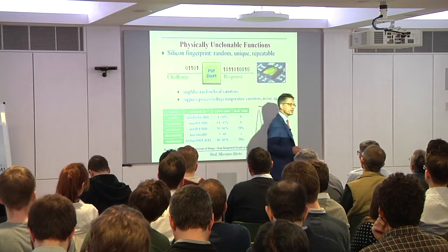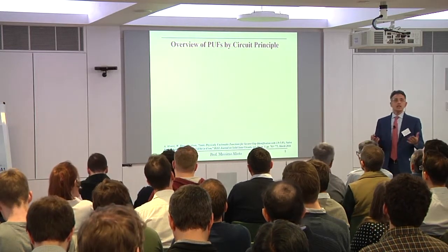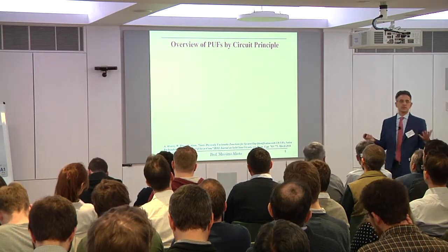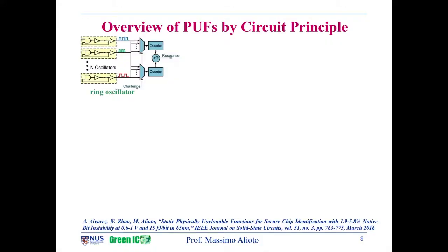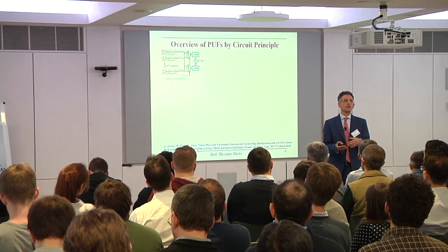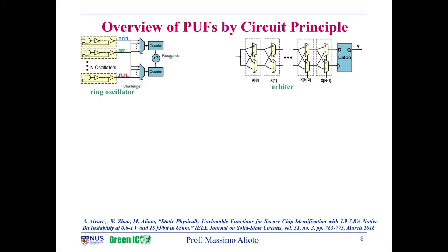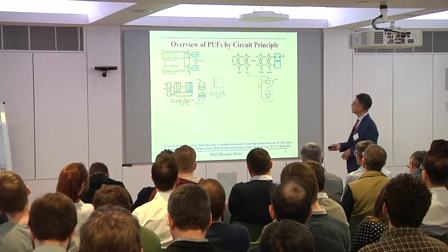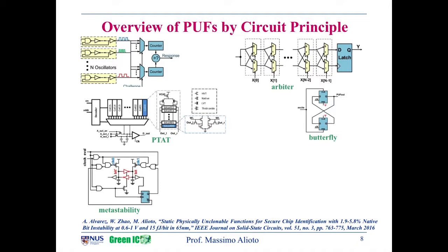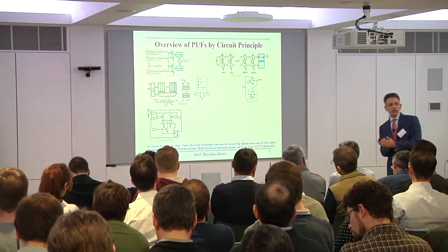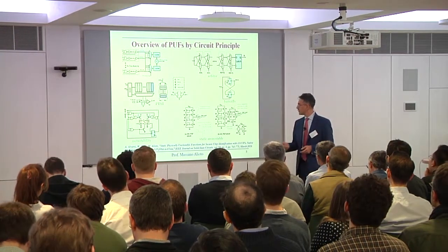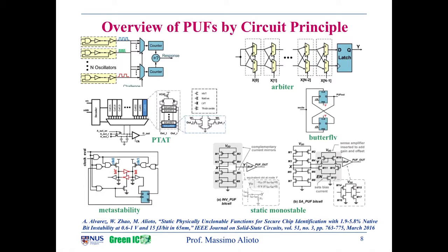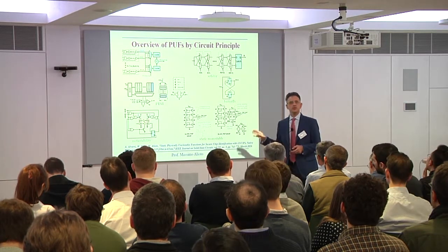Many PUFs have been proposed in the last few years. I will show six representative examples. From ring oscillators, you compare the oscillation frequency of ring oscillators — the output is randomly 1 or 0 based on which frequency is larger. Same with arbiter paths — you compare delays instead. Or you compare current and voltage references. Similarly, butterfly as well as metastability — you use a latch to see whether it tends to go one way or the other. And then what we call static metastable PUF, a new class we proposed two years ago at ISSCC, which I will use as a case study.